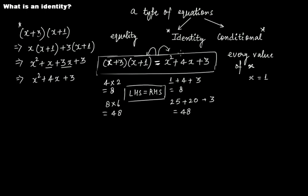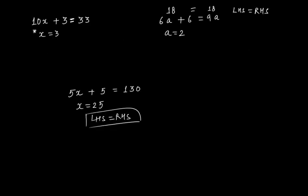So that's the difference: an identity is true for every value of the variable in the equation, whereas a conditional equation is only true for a particular value. That's the basic difference between identity and conditional equations.